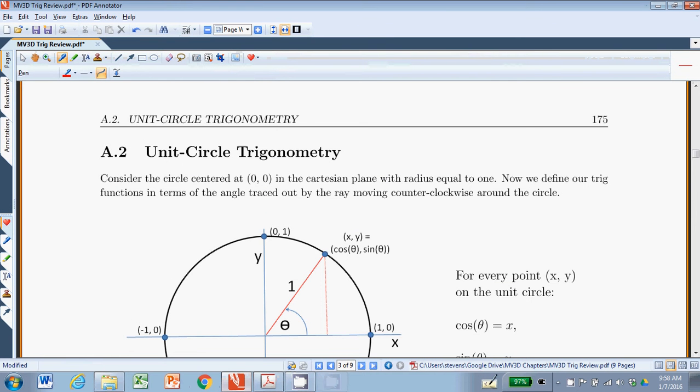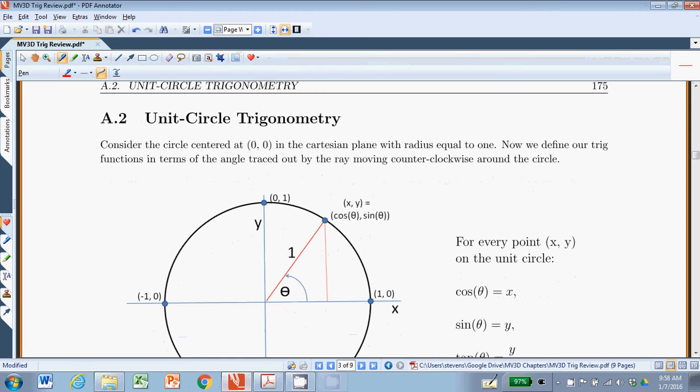In the previous part, we considered trigonometry in terms of a right triangle. We defined sine, cosine, and tangent in terms of side lengths of a right triangle. Here we're going to think of cosine and sine in terms of a unit circle.